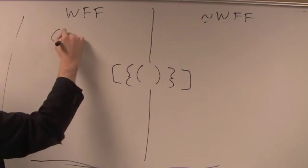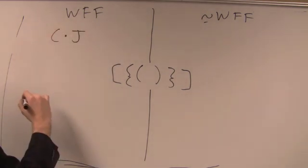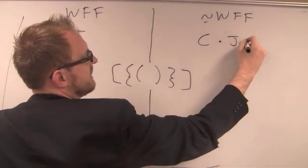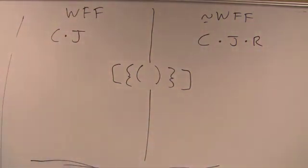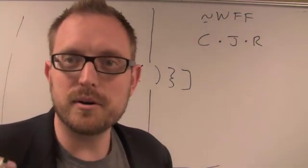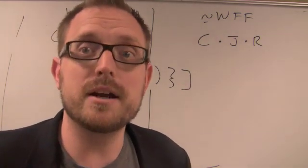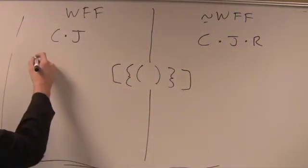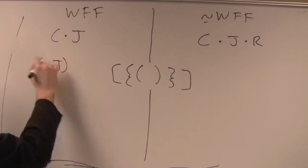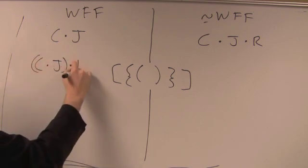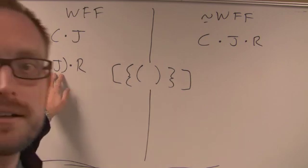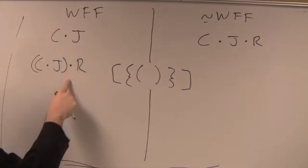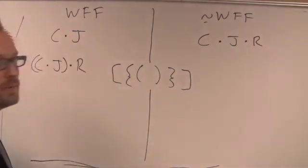So a well-formulated statement would be, for instance, C and J. A not well-formulated statement would look like this, C and J and R. That's not well-formulated because at the core of it, we always have to know what the primary operator is going to be, and in this case, I don't really know what's working. So a well-formulated statement would be something like this, C and J and R. That would then be well-formulated because here, I can say that this is the primary operator, actually, where here, I can never point to a primary operator.